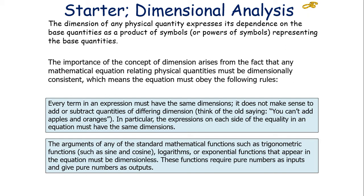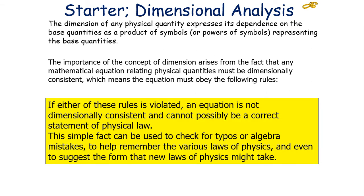Every term in an expression must have the same dimensions because it doesn't make sense to add or subtract quantities of different dimensions. The expressions on each side of the equality in an equation must have the same dimensions. And the arguments for any of the standard mathematical functions like sine, cosine, logarithm, and exponential that appear in an equation have to be dimensionless. If either of these rules is violated, an equation is not dimensionally consistent and cannot possibly be a correct statement of physical law.